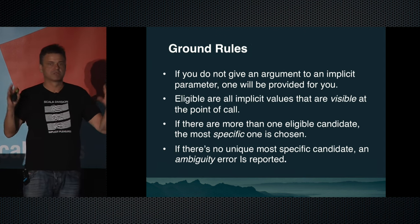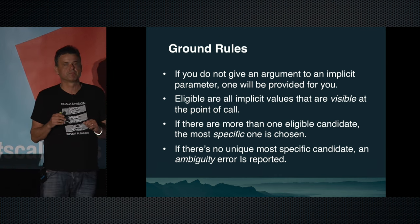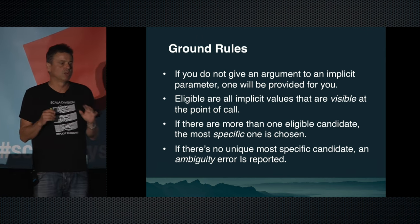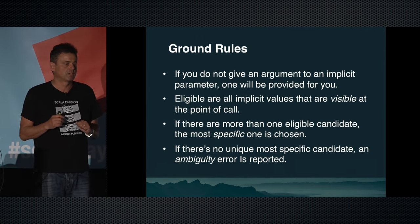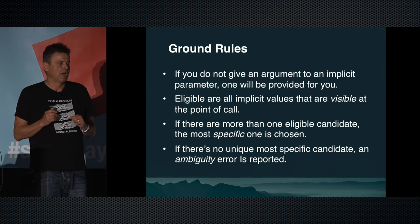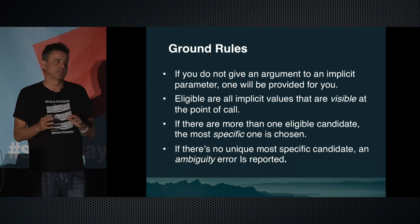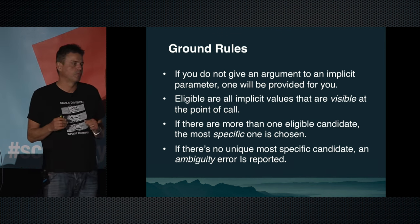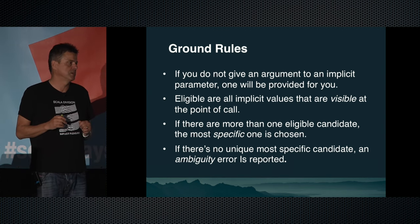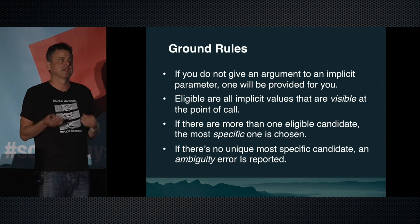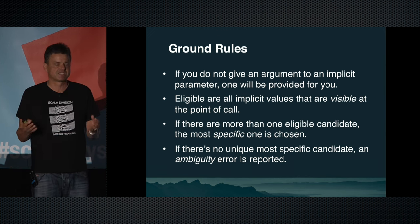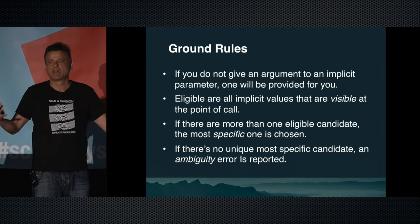Ground rules — just to get everyone on the same page. The rules are really very simple. The first rule: if you do not give an argument to an implicit parameter, one will be provided for you by the compiler. It will look at all implicit values visible at the point of call — visible by import, inheritance, defined at scope, or coming with the types that make up the implicit. The rules are formulated so that implicits are usually there when you need them.